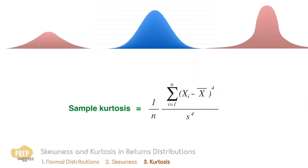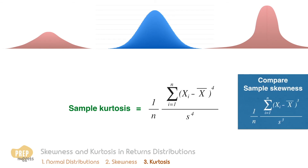To measure kurtosis, we calculate the sample kurtosis of the distribution. The formula for sample kurtosis looks similar to the sample skewness formula — the only difference is that you raise the numerator and denominator to the fourth power. Like sample skewness, this formula is only valid for large sample sizes.